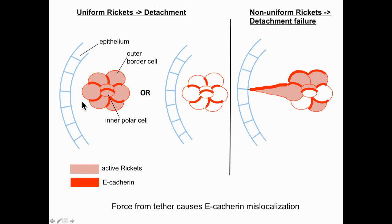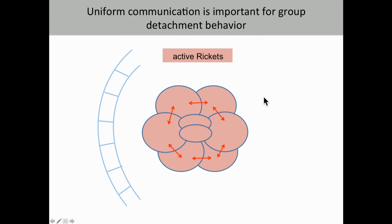The model is that when RICKETS is expressed uniformly in the border cells, RICKETS signaling is happening uniformly within the cluster. We expect RICKETS signaling affects a GTPase, PKA, or other downstream signaling molecule that, when uniformly active, allows the cluster to effectively regulate the timing of its detachment and E-cadherin is appropriately localized. When RICKETS is non-uniformly active, the cluster can no longer regulate its detachment timing and remains tethered to the epithelium. We expect the force of this tether causes E-cadherin redistribution within the border cell cluster.